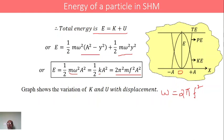Coming to potential energy: at one of the extreme ends the potential energy is maximum. As the particle moves toward the mean position, the potential energy decreases and becomes zero at the mean position. As it moves away from the mean position toward the other extreme end, the potential energy increases and reaches maximum again. As a whole, the total energy of the particle always remains constant — potential energy gets converted into kinetic energy and kinetic energy gets converted into potential energy as the particle moves to and fro.